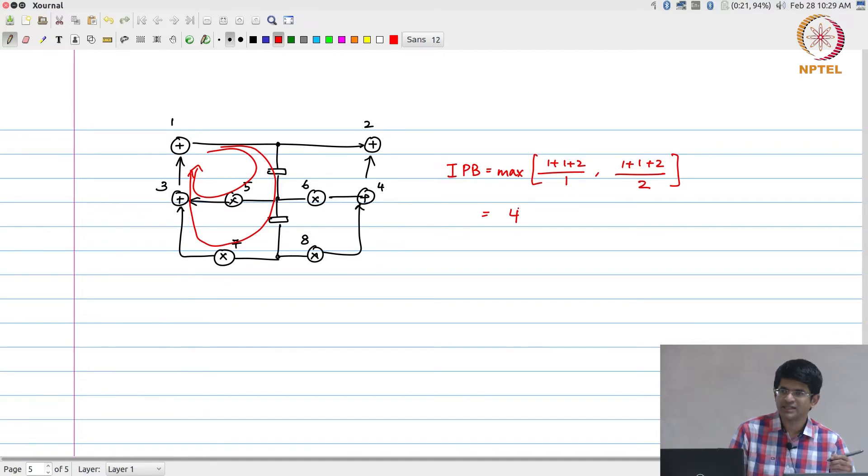Although critical path and iteration period are not the same thing, because I could have two parallel copies running, the moment I have a loop with a single delay element it means I cannot even use parallelism. There is a fundamental dependency between one iteration and the next, which means the best critical path I can achieve is basically given by whatever is the limitation within one loop.